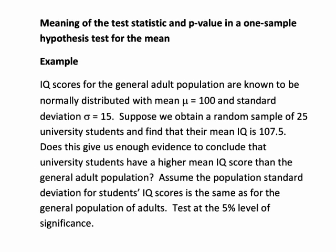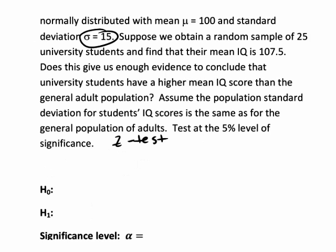The question we want to answer is: does this give us enough evidence to conclude university students have a higher mean IQ score than the general adult population? In this test we will assume that the population standard deviation for students' IQ scores is the same as for the general population of adults, and we will test at the five percent level of significance. This is a one-sample test for the mean and the population standard deviation sigma is known.